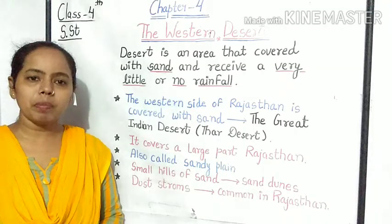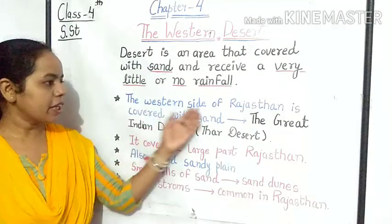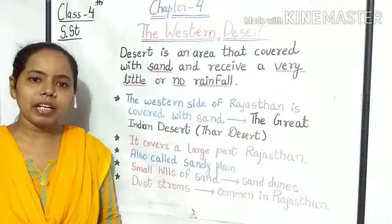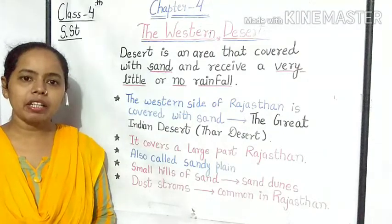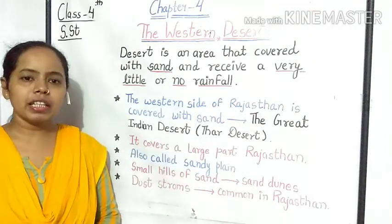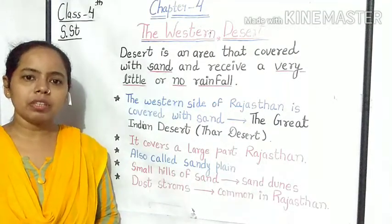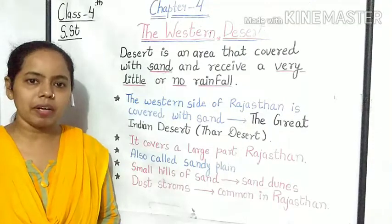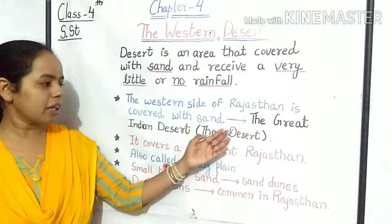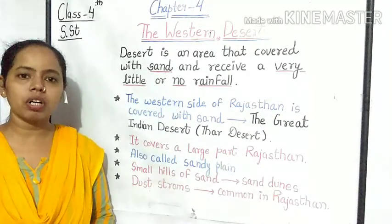The western part of our India is a desert area. The western side of Rajasthan is covered with sand. The western part of Rajasthan consists of the Great Indian Desert, which we also know by the name of Thar Desert. It covers a large part of Rajasthan.